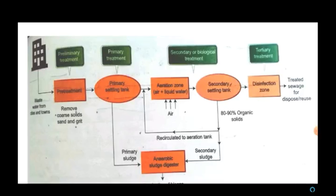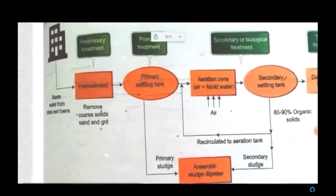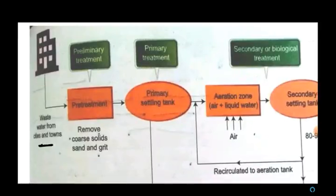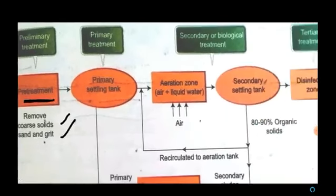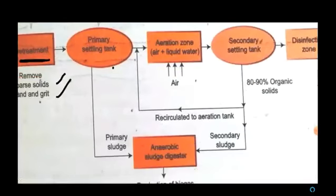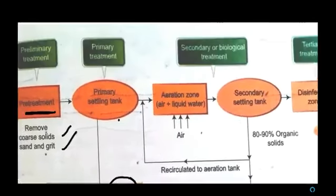This diagram represents the wastewater treatment process. Wastewater from cities and towns first goes to a pre-treatment tank where all coarse solids, sand, and grit are removed. It is then taken to a primary settling tank where solid substances are filtered out and made to sediment, producing primary sludge — the settled solids — and primary effluent — the supernatant. The primary effluent is taken to the aeration zone, while the primary sludge is taken to the anaerobic sludge digester where it produces biogas.